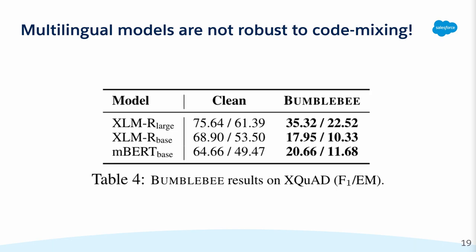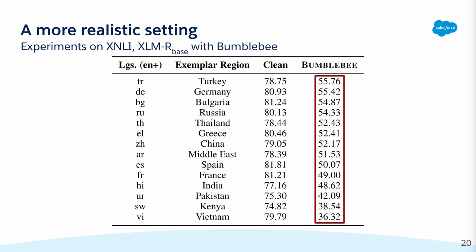We also observe similar trends in question answering, where we only modify the question instead of the entire paragraph for simplicity. Here we see that there is a significant drop in performance, even just from modifying the question. We also test on more realistic language pairs and triplets and find performance to be also significantly impacted in the presence of code mixing.